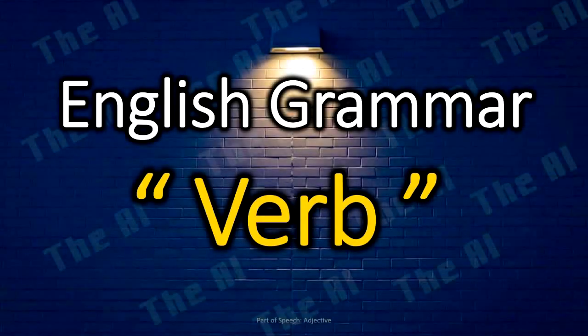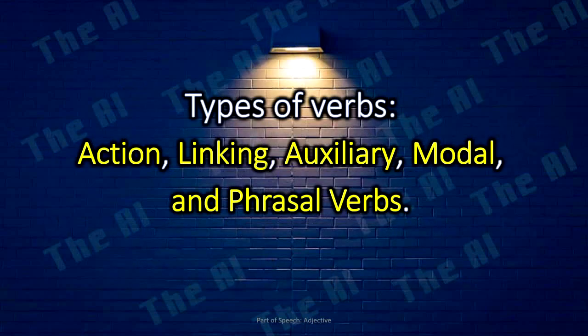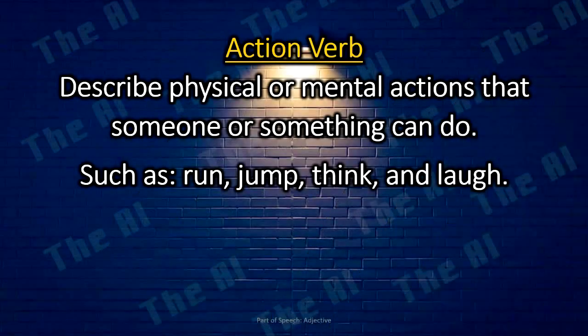Verb. A verb is a word that shows an action — physical or mental — or the state of being of the subject in a sentence. It is the part of a sentence that tells us what the subject performs. The different types of verbs are: action, linking, auxiliary, modal, and phrasal verbs. Action verbs describe physical or mental actions that someone or something can do, such as run, jump, think, and laugh.